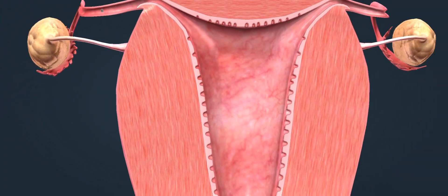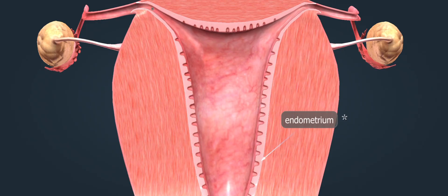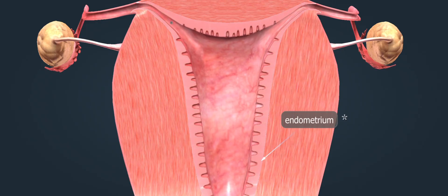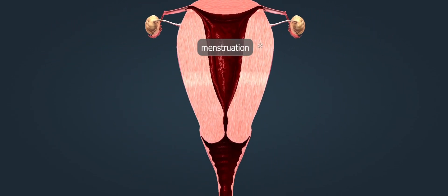Then, the embryo attaches to the endometrium, which is thick after ovulation, in preparation for the embryo. If fertilization does not take place, the endometrium dies and it is sloughed off by menstrual bleeding.